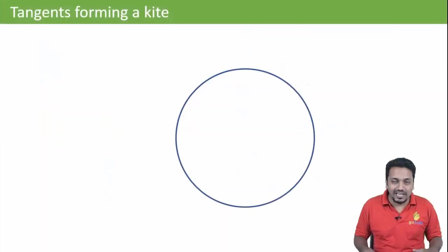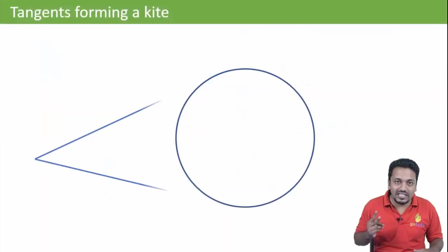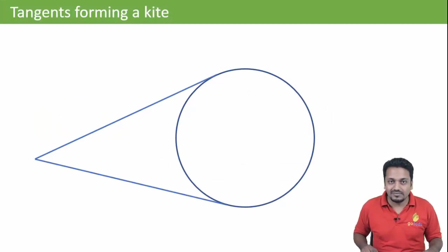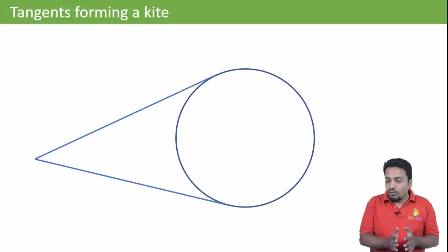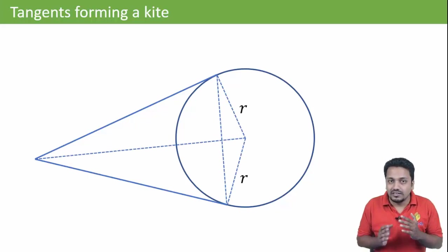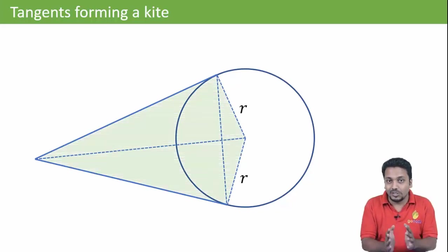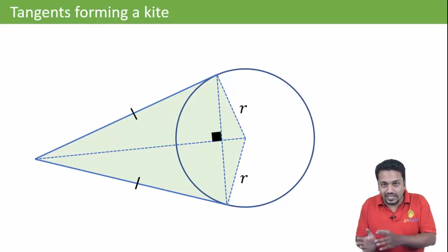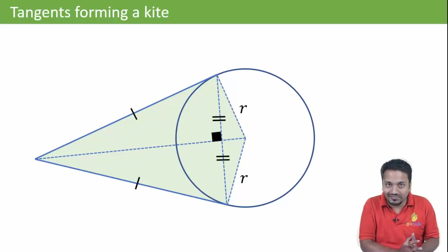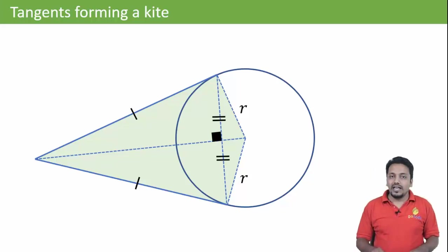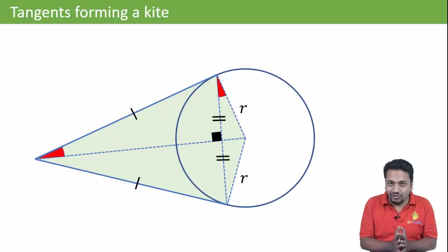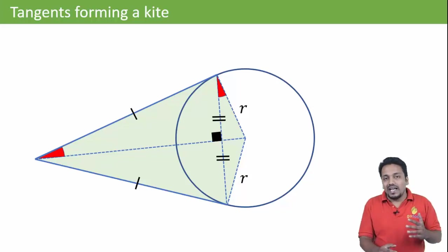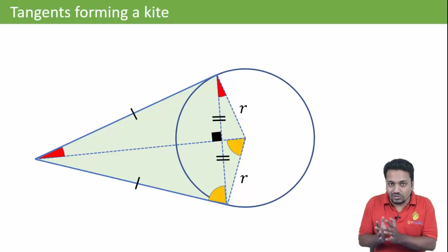We have a circle again with two tangents from an external point. If we join the points like this, the diagram we have is a kite. The two tangents are equal. The two diagonals are perpendicular and also one of the diagonals gets bisected. Angles marked in red are equal, and angles marked in orange are also equal.